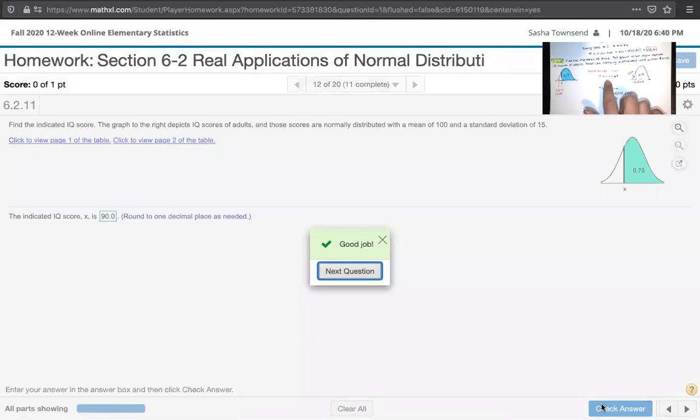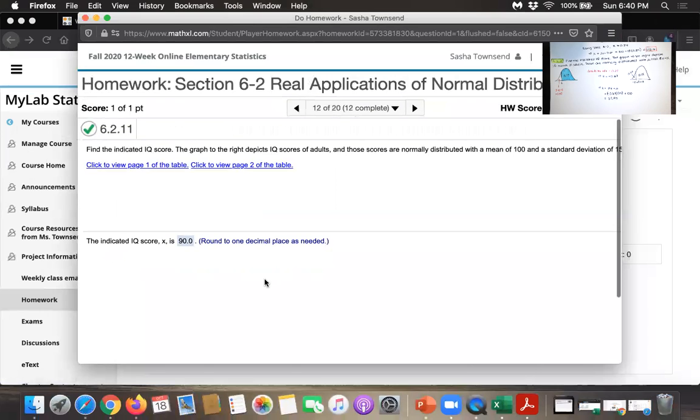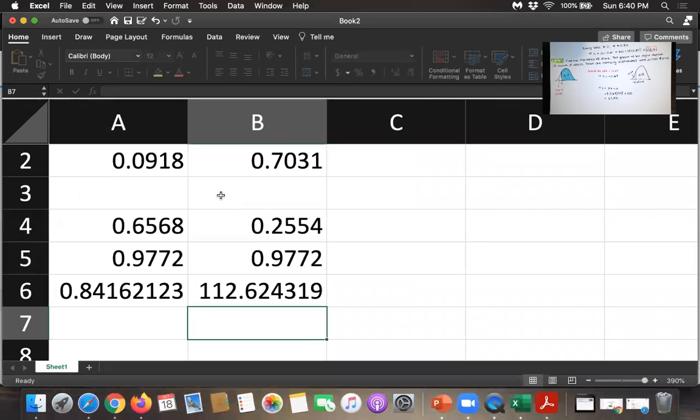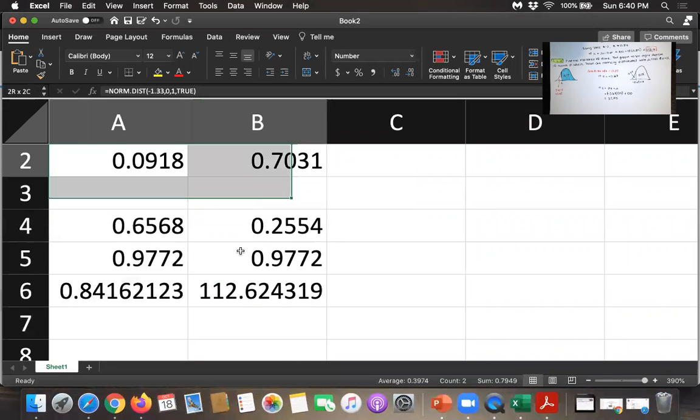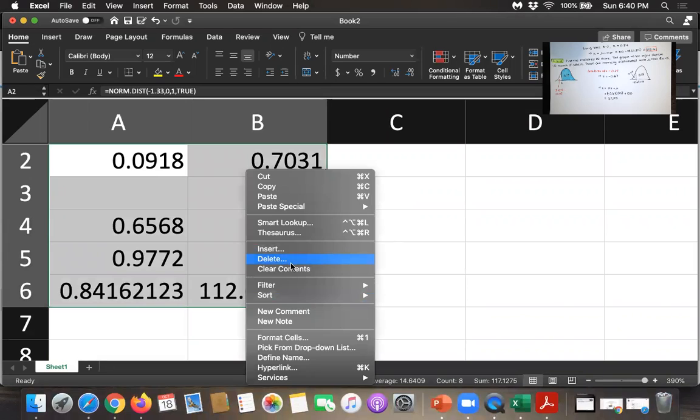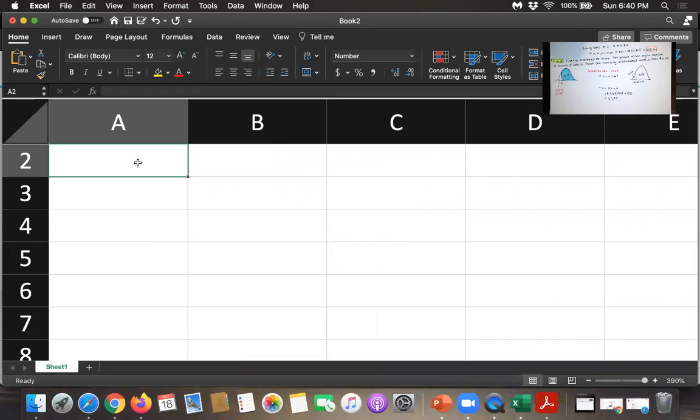Now I want to show you that you can get the exact same z-score, this z equals negative 0.67, using Excel as well. So hang on. We're just going to do exactly the same thing in Excel. Okay. Let me clear all these values.